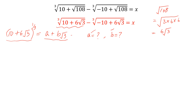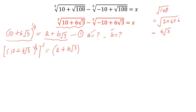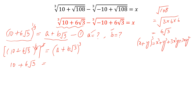We take the cube of both sides of this equation. So we cube (10 plus 6√3)^(1/3), which simplifies, and on the right side we write (A plus B√3) whole cubed. This gives us 10 plus 6√3 equals the expansion. We use the formula: (x+y)³ = x³ + y³ + 3x²y + 3xy².